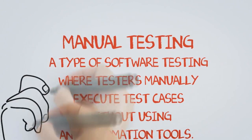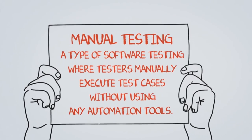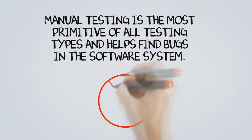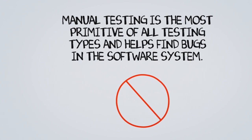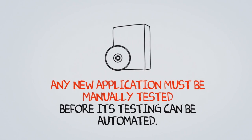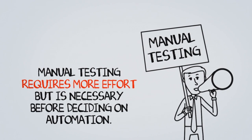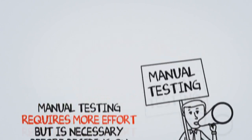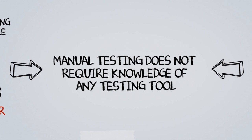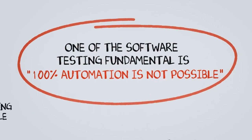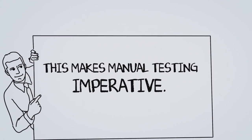Manual testing is a type of software testing where testers manually execute test cases without using any automation tools. It is the most primitive of all testing types and helps find bugs in the software system. Any new application must be manually tested before its testing can be automated. Manual testing requires more effort but is necessary before deciding on automation, and does not require knowledge of any testing tool. One of the software testing fundamentals is that 100% automation is not possible, which makes manual testing imperative.